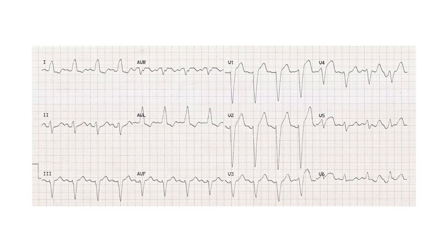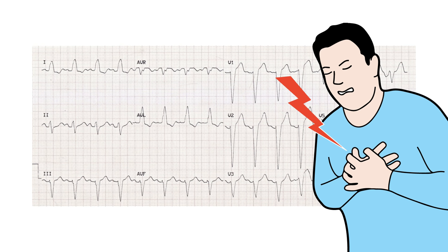Here is a patient with a left bundle branch block. If I told you this patient is having chest pain, you might have a difficult time picking up ST segment changes compared to someone with a normal EKG. But thankfully, the Scarbosa criteria can be helpful in specifically teasing out EKGs that may look more worrisome than they should be.